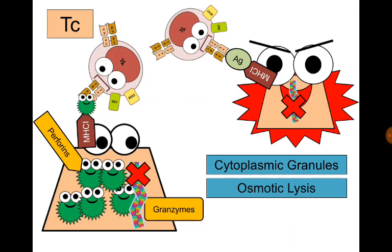Perforins perform pores in the target cell; through these pores, fluid enters the cell, causing osmotic lysis. T-cytotoxic cells also have a molecule on their surface called FAS ligand (Fas apoptotic signal ligand), which binds to a receptor on the target cell called FAS (Fas apoptotic signal), stimulating the target cell to undergo apoptosis — a clean death. T-cytotoxic cells are very specific: the cell responsible for killing virus B infected cells, for example, kills only virus B infected cells.